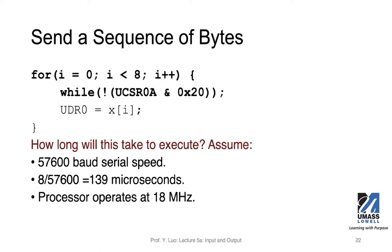If we send out a sequence of bytes, we have to do the same thing for all bytes in the sequence. We have a for loop, and in each loop iteration we have to do the polling — checking this control register to see if the transfer buffer is available. If it is, we assign the outgoing value to the UDR0 transfer register. Because we are sending these bytes back to back, when we get to the second iteration of the for loop, chances are the previous byte is still being transferred, so we might be stuck on this while loop for some time.